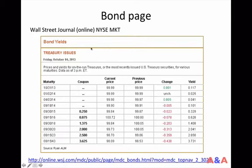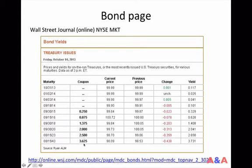Let's look at a bond page. This is from the online Wall Street Journal, dated 4th October 2013, showing samples of U.S. Treasury bonds. The maturities shown are one month, three months, six months, one year, two years, three years, five years, seven years, ten years, and thirty years. Some bonds have coupons — for example coupon rates of 0.25%, 0.8%, 1.3%, 2%, 2.5%, and 3.6%. As a matter of course, a one-month bond is more expensive than a one-year bond. And a three-year coupon bond here is more expensive than the two-year bond because it has a higher coupon rate.